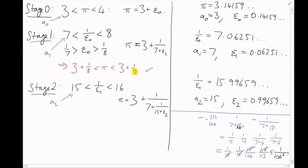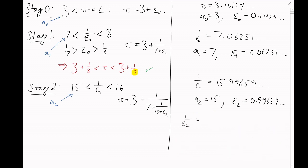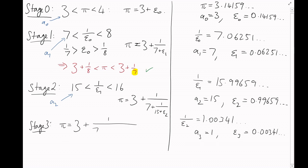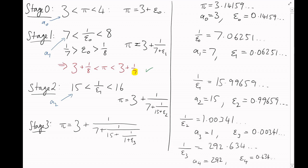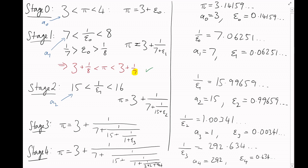Doing a couple more: the reciprocal of ε₂ is 1 and a bit, so a₃ = 1 with error ε₃, giving the approximation 355/113. And the reciprocal of ε₃ is 292 and a bit, so a₄ = 292 with error ε₄, giving the approximation 103,993/33,102.